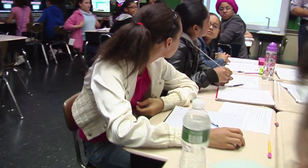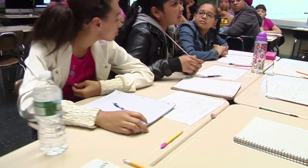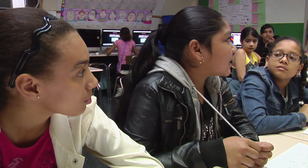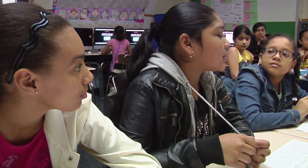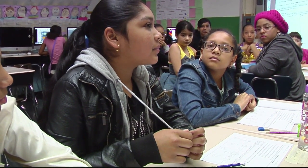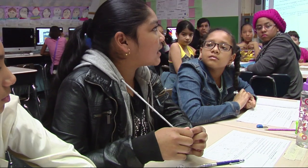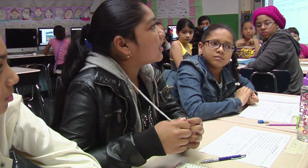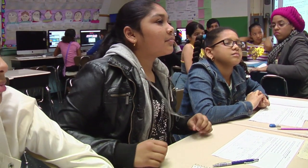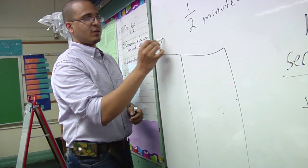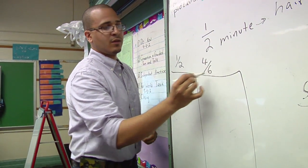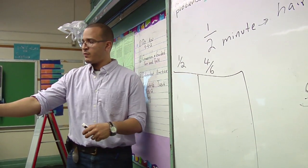My group discussed that we could change it into common denominators, which would be 60, because one minute equals 60 seconds. And then we could divide 60 by 6, and that would give us 10. So actually, can you come up here and show what you're thinking to everyone?